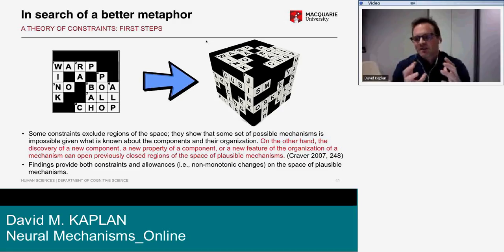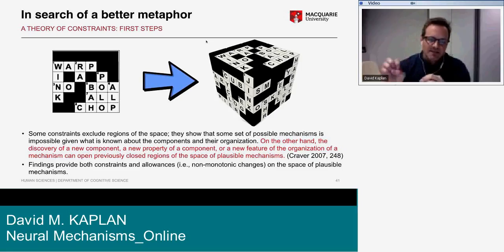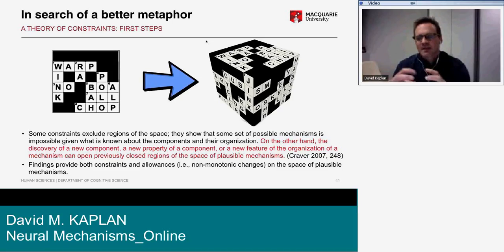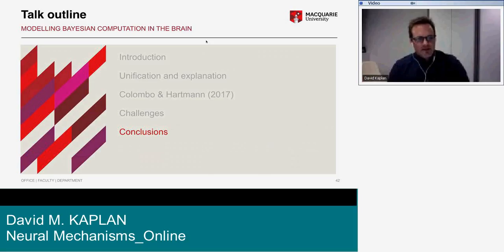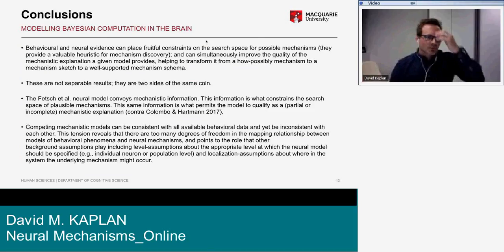Findings provide both constraints and what I'll call — in a clunky term — allowances, capturing non-monotonic changes to the space of plausible mechanisms. As you add more evidence, you don't just monotonically decrease the space of possible mechanisms — you might instead open up some new region of space that was previously unexplored.